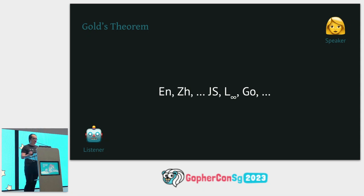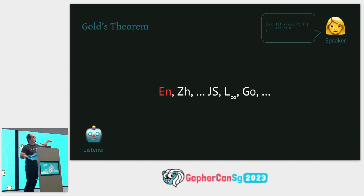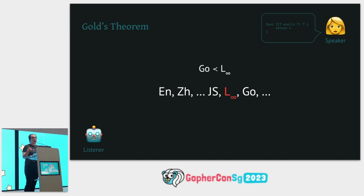The listener will first consider the speaker speaking English. As long as the speaker speaks sentences that are a subset of English, the listener stays on that hypothesis. But as soon as there is a sentence that is not a subset of English, the listener moves on to the next language — in this case Chinese — and so on. Eventually the listener hits on the hypothesis that the speaker is speaking L-infinity.